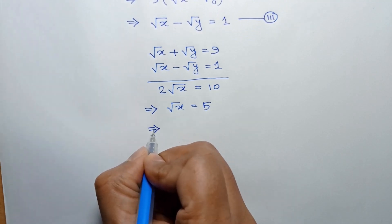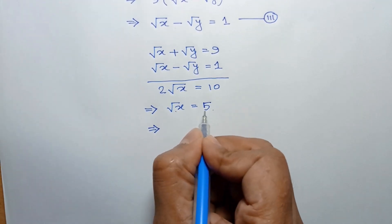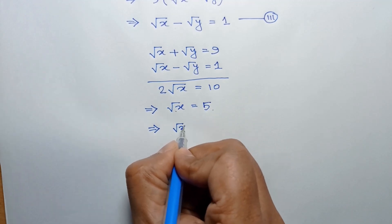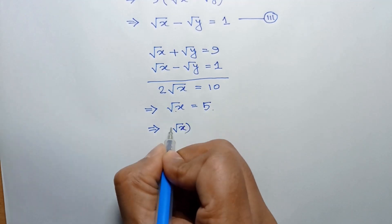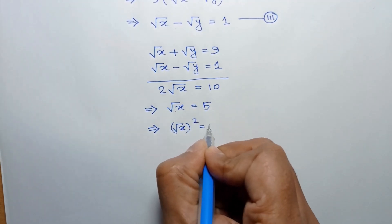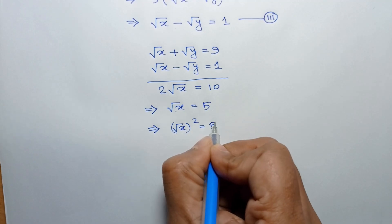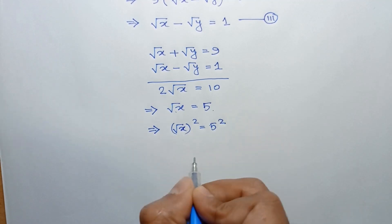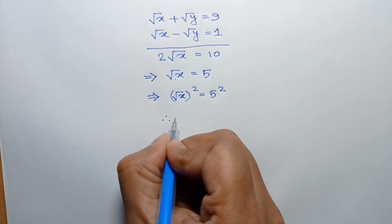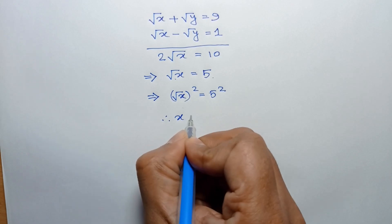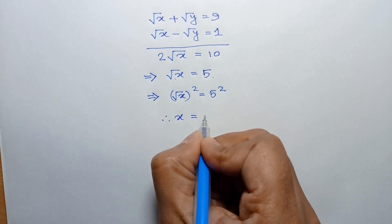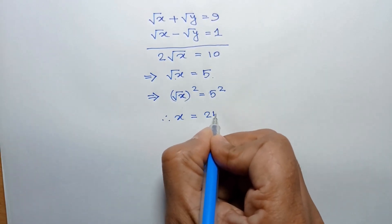Squaring both sides, square root of x whole square equals 5 squared, so the value of x equals 25.